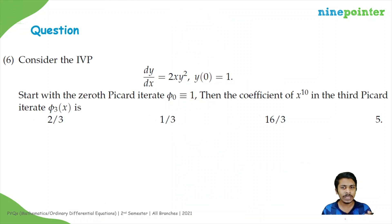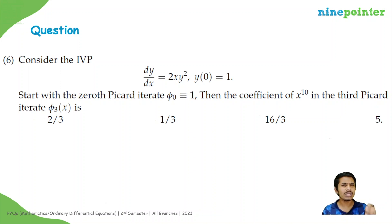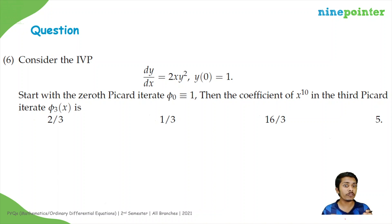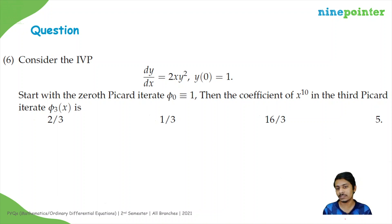Consider the IVP dy/dx equal to 2xy² with y(0) equal to 1. Starting with the zeroth Picard iterate φ₀ identically equal to 1, the coefficient of x raised to n in the third Picard iterate φ₃(x) is?